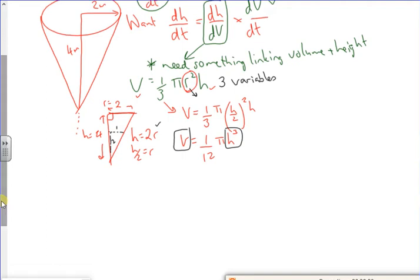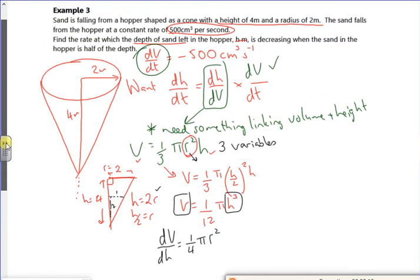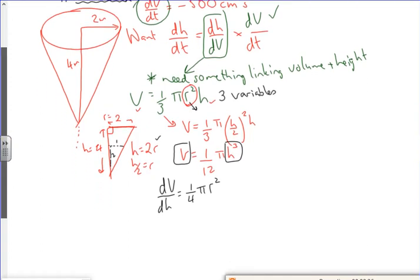We okay? You still with us? Right, so I've got dh by dv to find. So let's differentiate this. So dv by dh is take the 3 at the front, it's a quarter pi r squared. Now I want to find it when the hopper is half its depth. So when it's half its depth, h is 2.